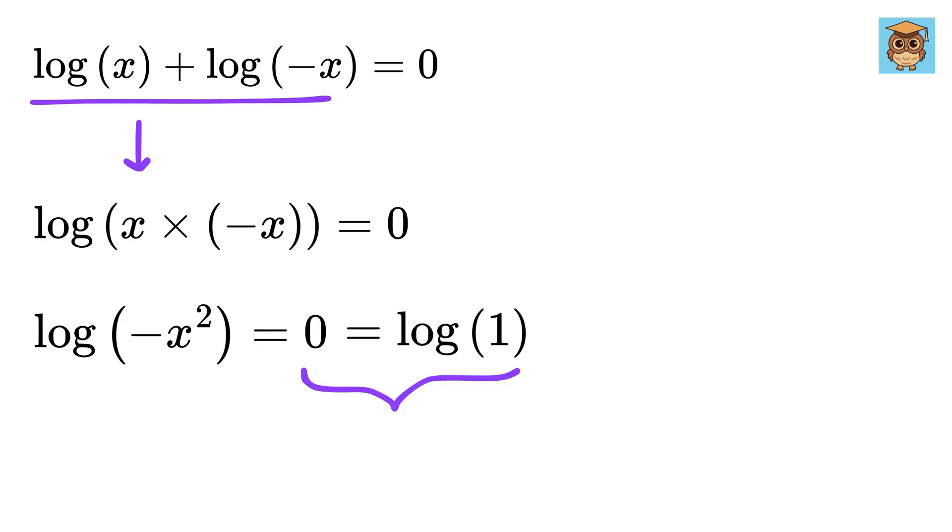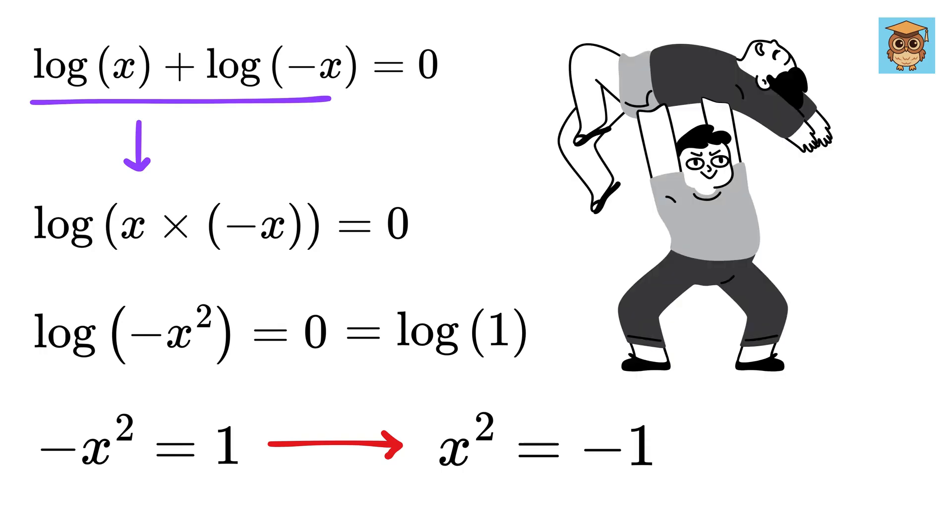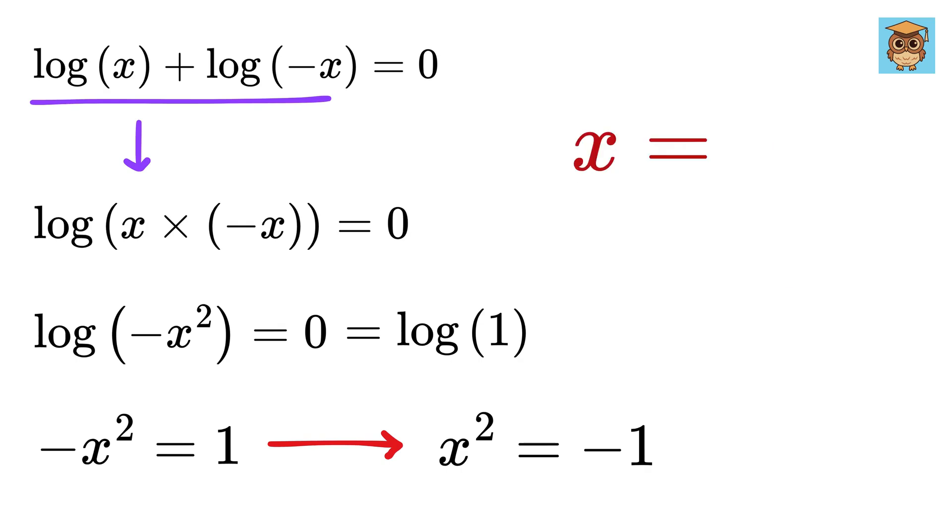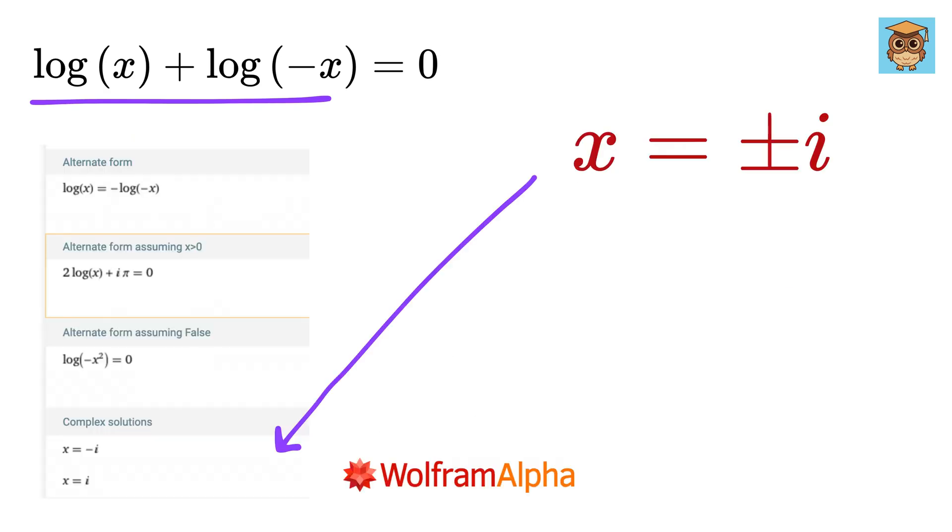But we know that log of 1 equals 0, and thus minus x square equals 1, or x square equals minus 1, and we definitely know this one. We have x equals plus minus i, and Wolfram Alpha also confirms the same.